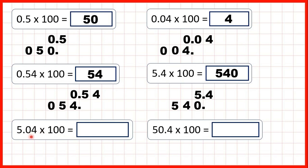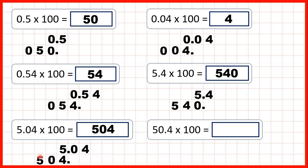Next, 5.04. So we write the number out, and to multiply by a hundred we copy down the decimal point and move the digits two squares to the left. Now we have the decimal point at the end of our number, so our answer is 504. This time it's really important to remember to include this zero, because we need to show that the five is now in the hundreds column. If you have a zero between other digits, we need to include that zero in our answer — we can't ignore it.